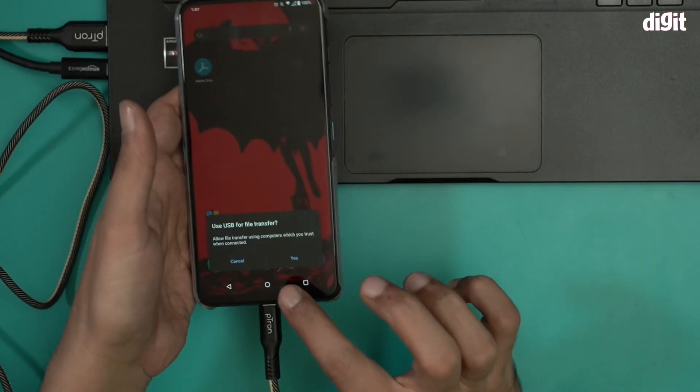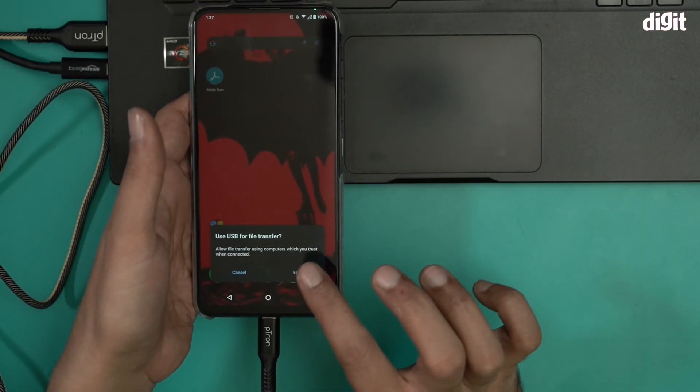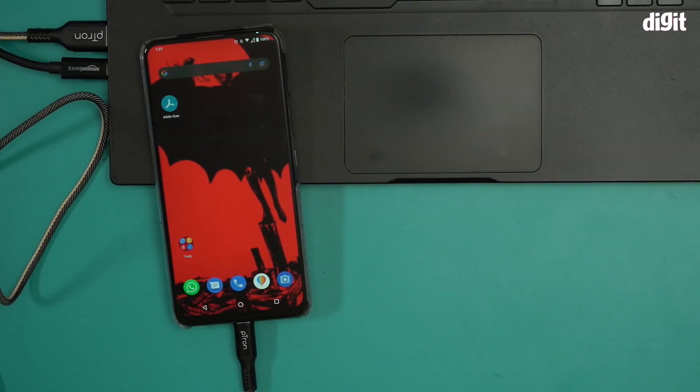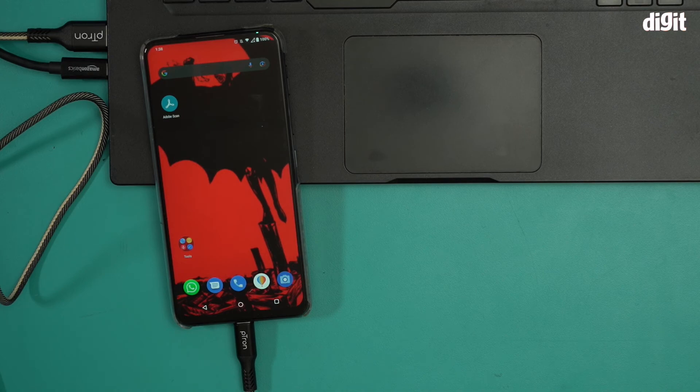Now over here I'm getting this 'use USB for file transfer' option. And this is it. This is what you find inside the box containing the Petron Solero 3.1A Type-C charging cable. Thank you for watching.